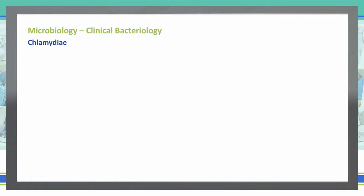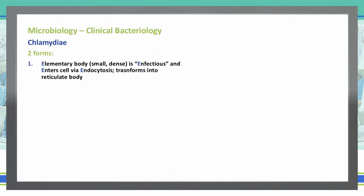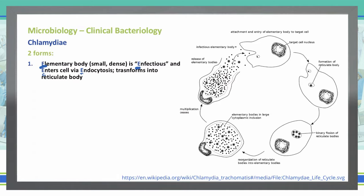There are two forms of chlamydia: the elementary body and the reticulate body. The elementary body is a small, dense body that is infectious — think 'E' for elementary, 'E' for infectious — and it enters the cell via endocytosis. It then transforms into the reticulate body, which replicates by cell division and reorganizes back into elementary bodies.